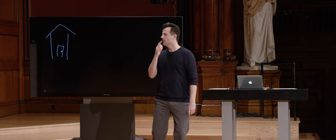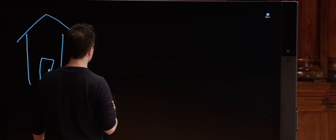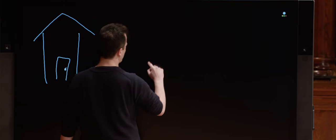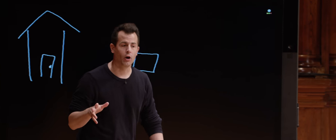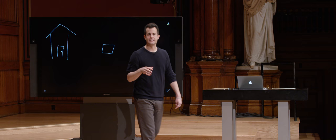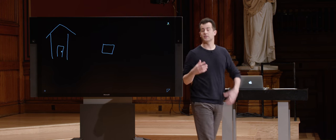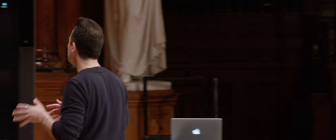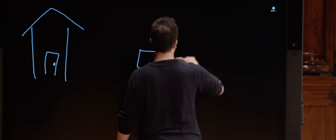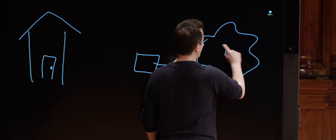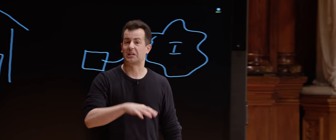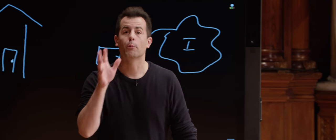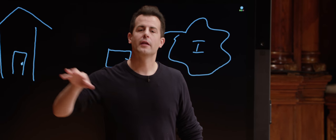What are those devices? Odds are inside of your home you have a device called a cable modem, or a DSL modem, or a Fios device. That device is something you generally pay some number of dollars per month for, because you're paying for an ISP — an internet service provider. That device is somehow connected to the internet, which we'll just draw as a cloud. And that device comes from an internet service provider like Verizon, or Comcast, or any number of other providers who are themselves on the internet.